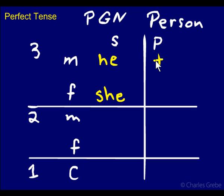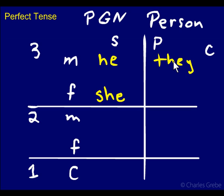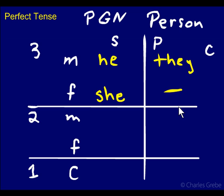Plural: we have 'they.' Now in this paradigm — the perfect paradigm — there is no distinction in gender in the plural, no masculine-feminine distinction. So this is just referred to as C. This would be 3CP: third common plural. When you get to the imperfect, which is the next paradigm, it does distinguish gender in the plural — so you have 3MP and 3FP, third feminine plural. In the perfect, we just have 3CP — one form.